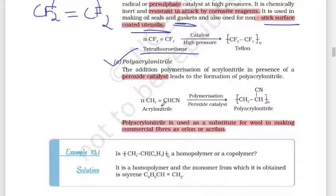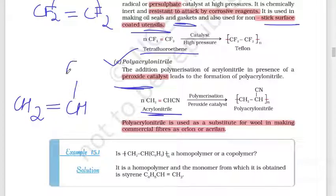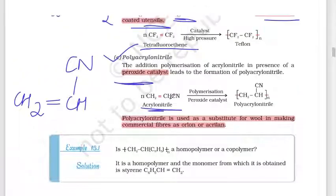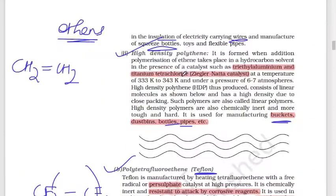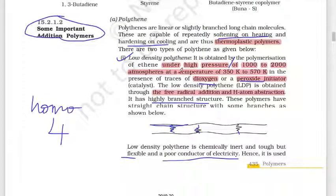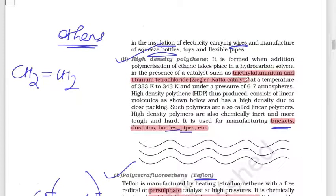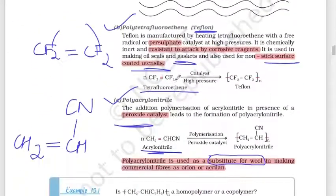Next is polyacrylonitrile. The monomer acrylonitrile has the structure CH2=CH–CN. Using a peroxyl catalyst, acrylonitrile undergoes polymerization to form polyacrylonitrile, which is used as a fiber.